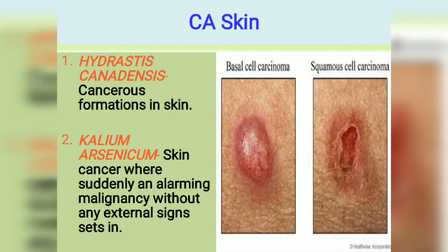You can see on this slide basal cell carcinoma, squamous cell carcinoma, and melanoma. The first medicine is Hydrastis Canadensis for cancer formations in the skin — if there is any kind of cancer, we can use Hydrastis. The second one is Calcarea Arsenicum, a good medicine because calcium acts on the skin and produces cancer generally.